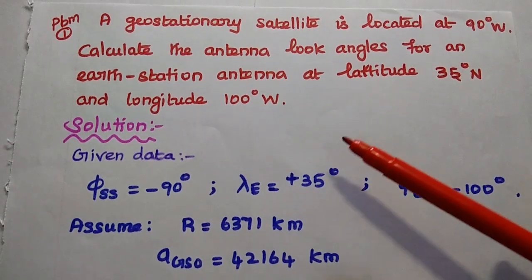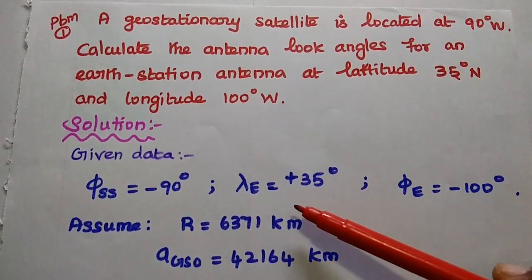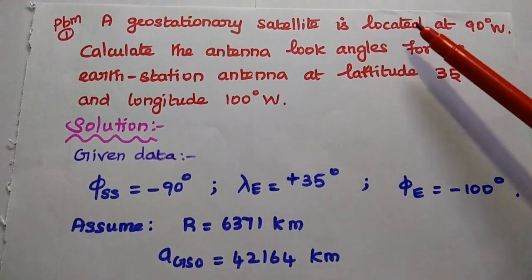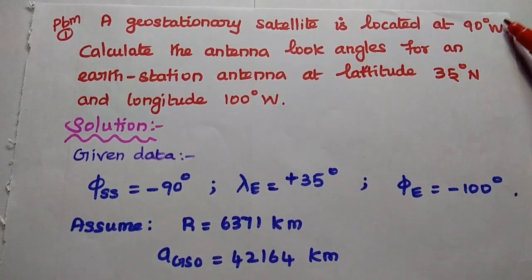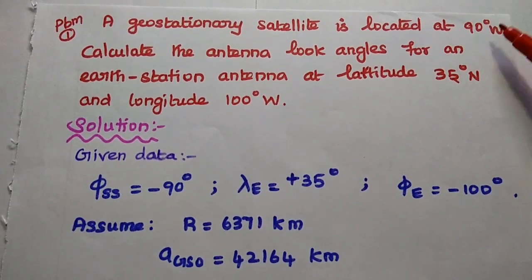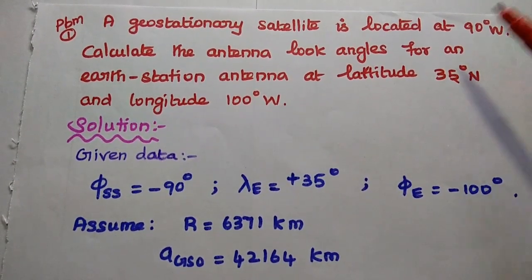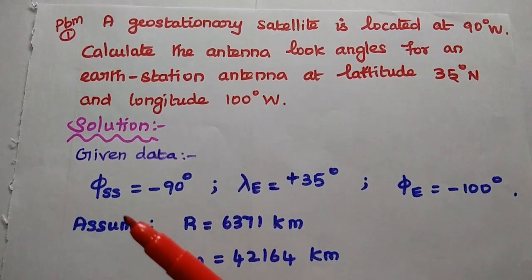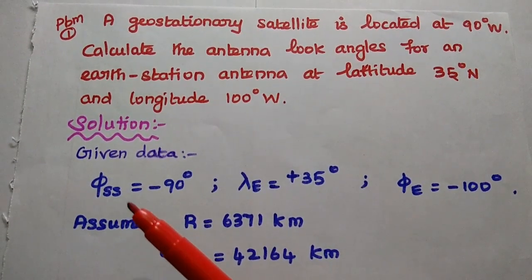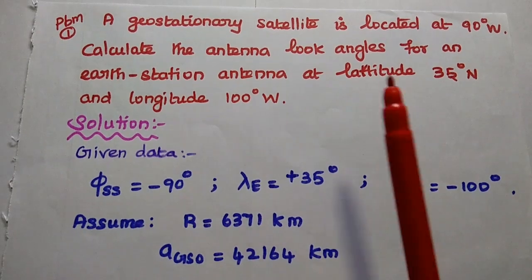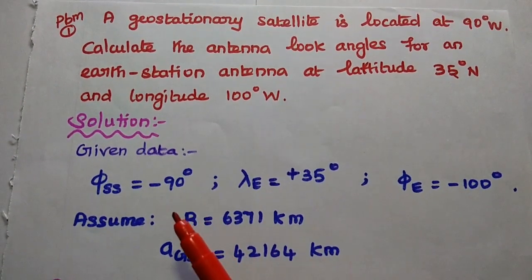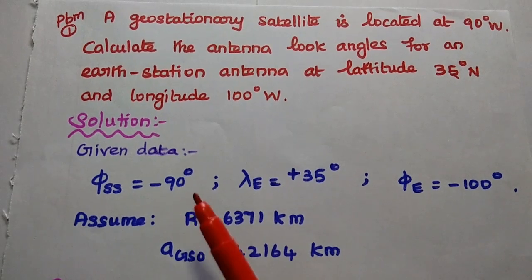In the solution, we first write the given data. The satellite is located at 90° west — this is the subsatellite point, and west represents longitude. So phi_ss equals −90°. The latitude of the earth station is lambda_e, and since it is north, it is positive: lambda_e equals +35°. The longitude of the earth station is phi_e, and since it is west, it is negative: phi_e equals −100°.